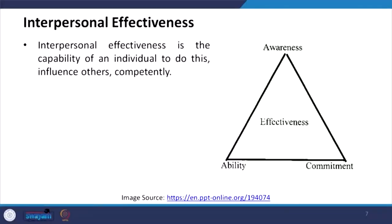Interpersonal effectiveness is the capability of an individual to influence others competently — these are traits of leaders. Effectiveness is developed through knowledge, attitude, skills, and habits. The commitment element refers to loyalty. When we are creating this commitment amongst team members, effectiveness has to be there. The third element of interpersonal effectiveness is awareness — are you aware of your surroundings, your environment, and the people working with you? If they are equally competent, they will be able to perform.